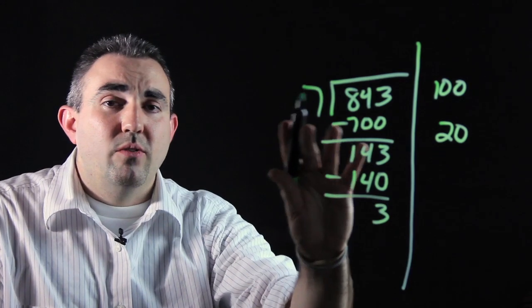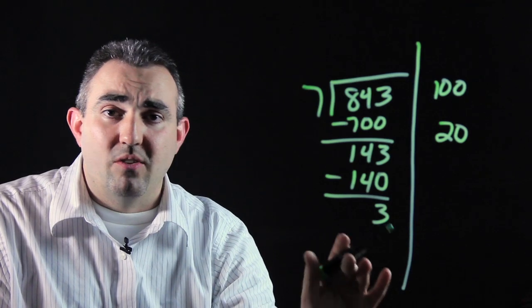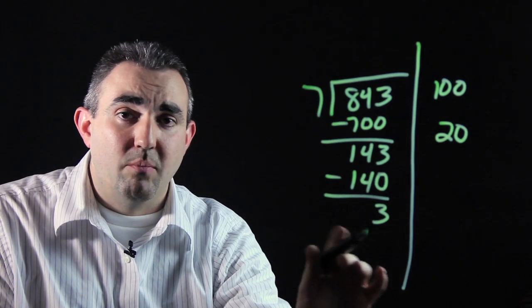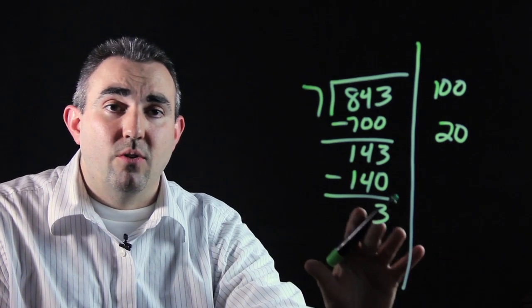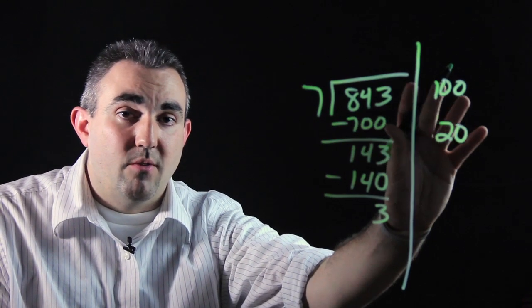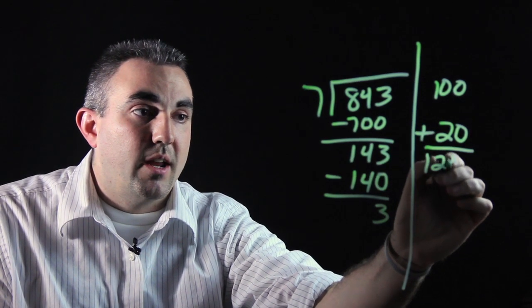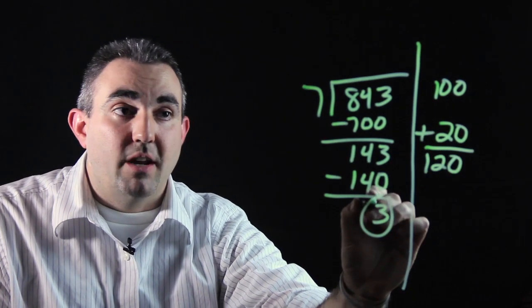Now, using multiples of 100 or 10, 7 times either one of those numbers, 100 or 10, are going to be way too big, bigger than 3. So you're done with your division. We have 100 and we have 20 on this side of our problem. What you need to do is add those numbers. You get 120, and this 3 down here is your remainder.